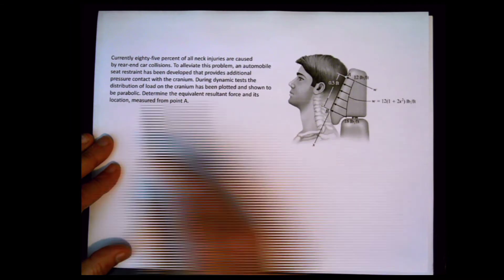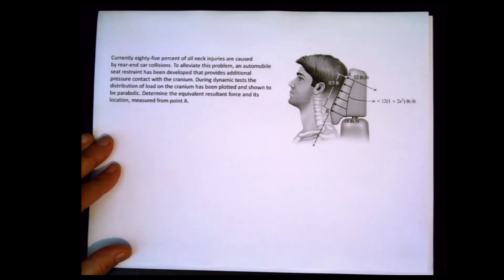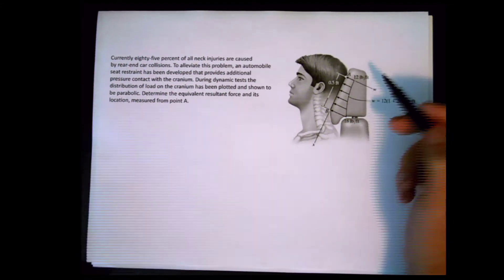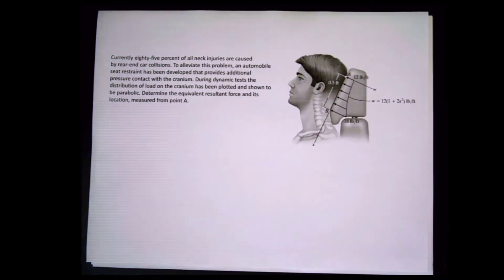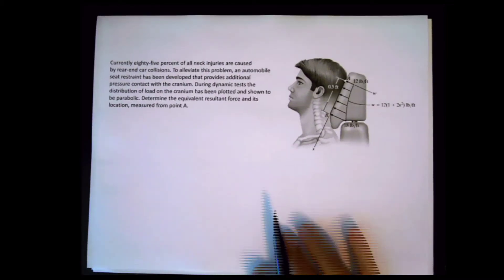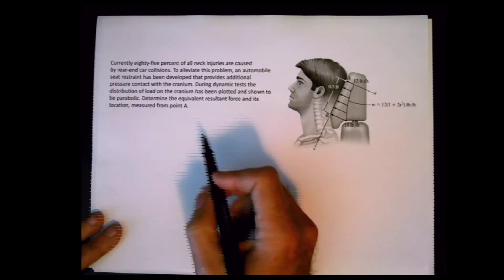It's a parabolic distribution. We need to determine the equivalent resultant force and its location measured from point A. You know those old Charlie Brown movies where when the parents talk, the kids only hear 'wah wah wah'? That's basically the long problem description — this key part is what you are actually interested in.